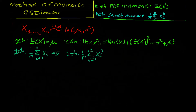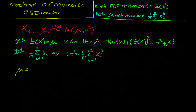Like we've been doing in every video, we set the k-th population moment equal to the k-th sample moment. Setting the first population moment equal to the first sample moment: the first population moment equals mu and the first sample moment equals x-bar. So the method of moments estimator for mu is mu-hat equals x-bar.